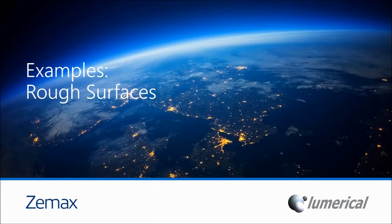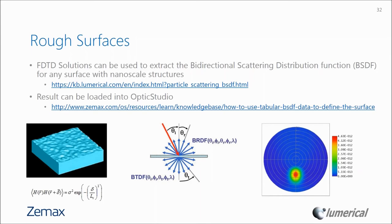Rough surfaces are a work in progress. FDTD Solutions can extract a BSDF function to model complex nanoscale surface structures, but we don't yet have a good way to implement those directly in OptiStudio. We've worked together with Lumerical to be able to import BSDF files from Lumerical into OptiStudio. The images show a rough surface in Lumerical on the left and an imported BSDF file in OptiStudio on the right, though these are not yet the same file. We'd love feedback on specific applications of interest.